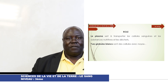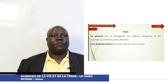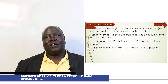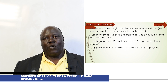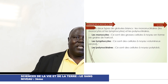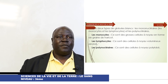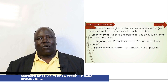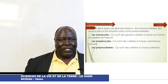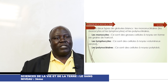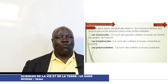Les globules blancs ou leucocytes sont des cellules avec noyau. Il existe deux types de globules blancs. Nous avons les mononucléaires — mono signifie un et nucléaire signifie noyau — comme les monocytes et les lymphocytes. Nous avons aussi les polynucléaires. Les monocytes sont de grosses cellules à noyaux en forme de graines de haricots. Les lymphocytes sont des cellules à noyaux volumineux arrondis. Les polynucléaires sont des cellules à noyaux polylobés.